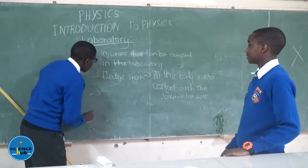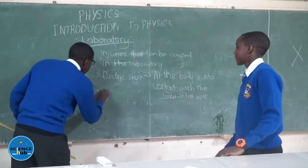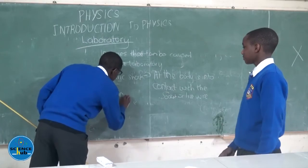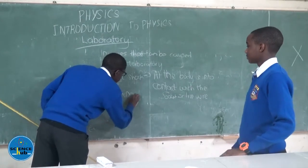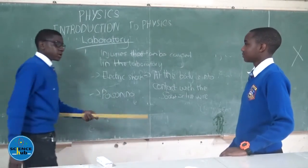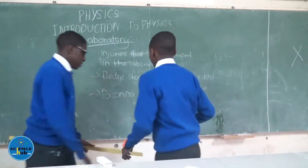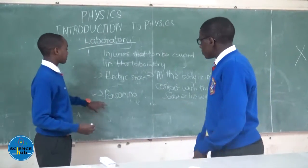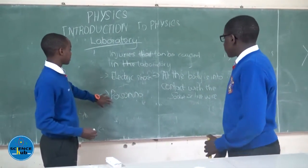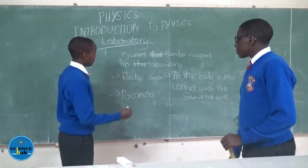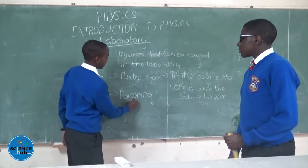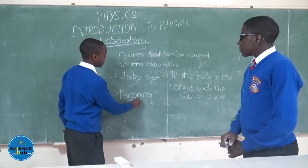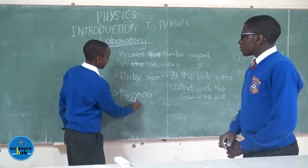Another accident in the laboratory is called poisoning. Due to your lack of expertise in handling chemicals, if poisoning occurs, you should immediately seek further attention from others — a teacher or medical personnel.